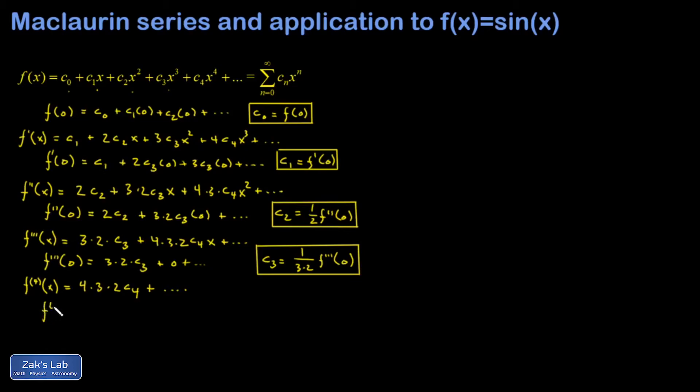So when I evaluate this at x equals 0, I get my c4 coefficient. And that's going to be 1 over 4 times 3 times 2 fourth derivative of f evaluated at 0.